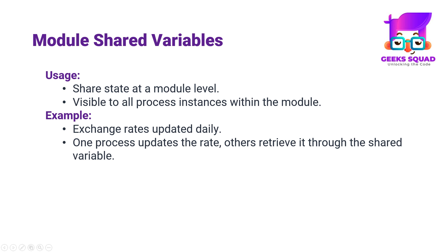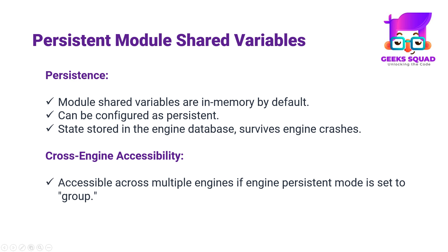For example, persistent mode in module shared variables. While module shared variables are in memory by default, they can be configured as persistent. This persistence ensures that the current state is preserved even in the face of an engine or app node crash. By configuring a module shared variable as persistent, its state is saved to the engine database, providing a robust solution where the variable state is restored upon engine restart.